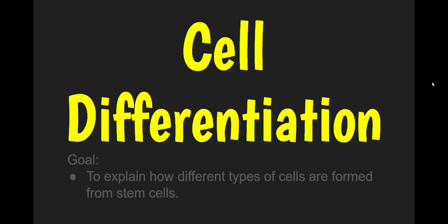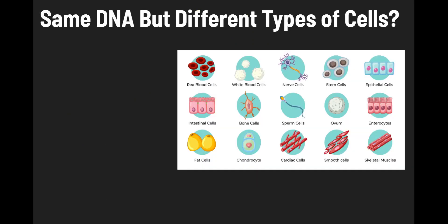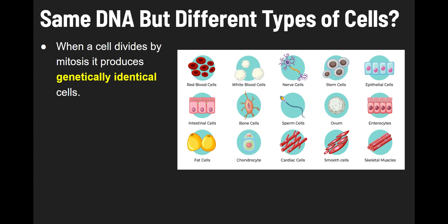Today we're going to talk about cell differentiation, and the goal of this video is to explain how different types of cells are formed from stem cells. So first I want to start with a kind of puzzle. When a cell divides by mitosis, it produces genetically identical cells. That means that the cells produced are exactly the same with respect to their genes.